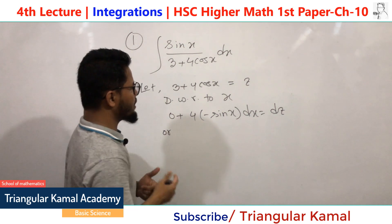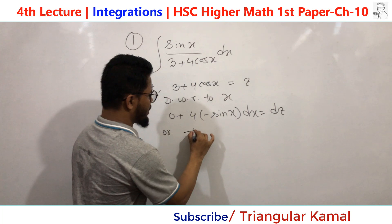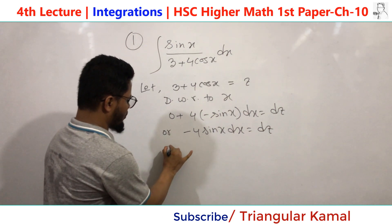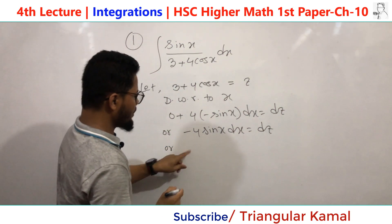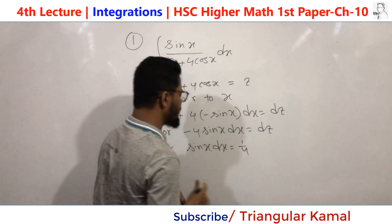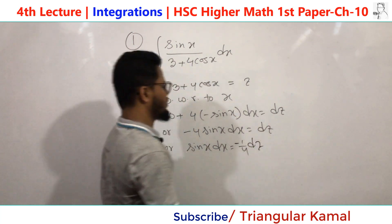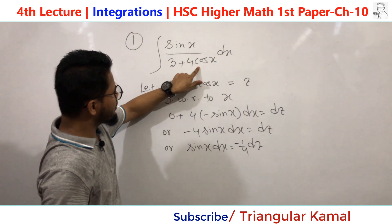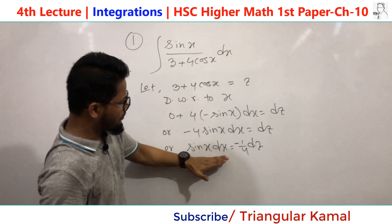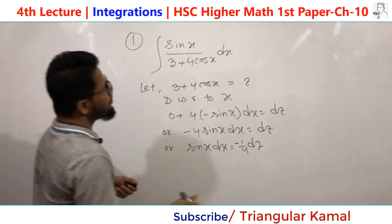So we have −4 sin(x) dx = dz. Now convert: sin(x) dx = −(1/4) dz. We started from the denominator part, and after finding the result we see that sin(x) dx in the original integral is replaced by −(1/4) dz. Now we can use this substitution.